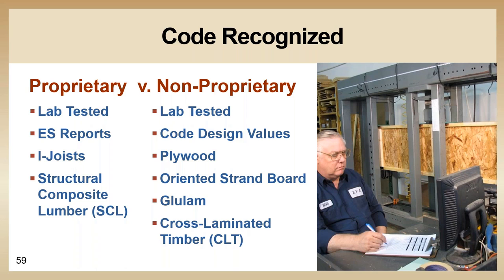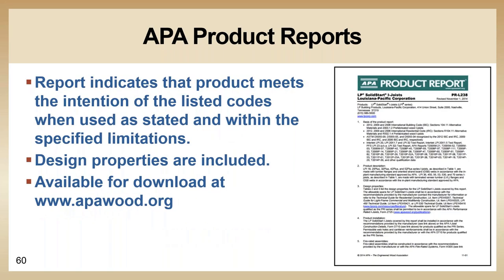Engineered wood products that bear the APA trademark are manufactured in accordance with APA or national standards. The trademark is the manufacturer's assurance that the product conforms to the standards noted on that trademark, and APA members commit to a rigorous service program of quality inspections and testing. Many engineered wood products are also proprietary and use proprietary engineering standards reports and APA product reports for code recognition, product use, and design information. These reports indicate that the product meets the intention of the building code when used as identified in the report, identify specific design uses and limitations, as well as design properties, and are available for free download at apawood.org.